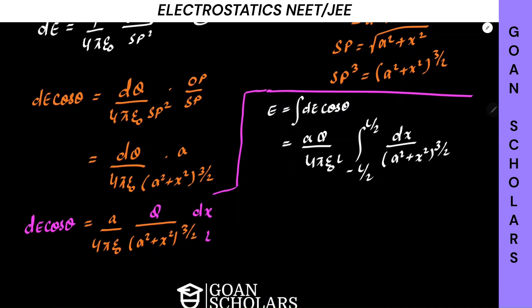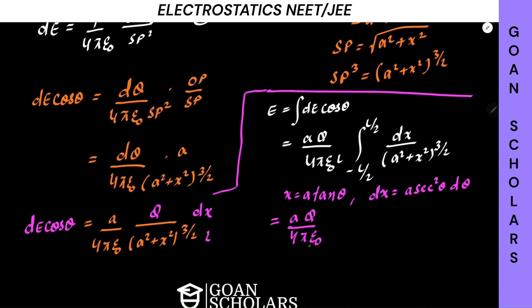The integral is ∫dx/(A² + x²)^(3/2) from −L/2 to L/2. To evaluate this, we use the substitution x = A tan θ, so dx = A sec²θ dθ. The limits also change accordingly. Let's simplify this integral separately and then substitute back.